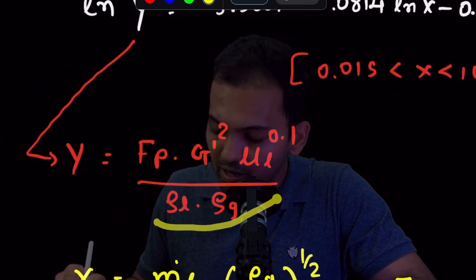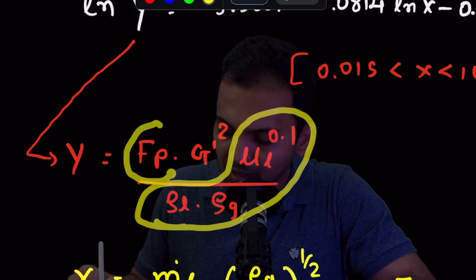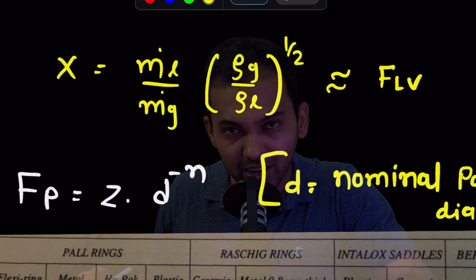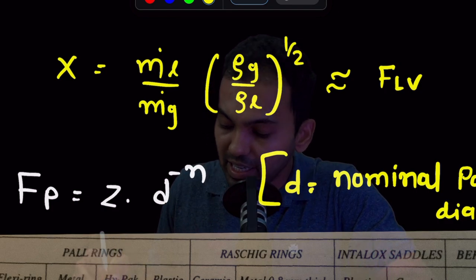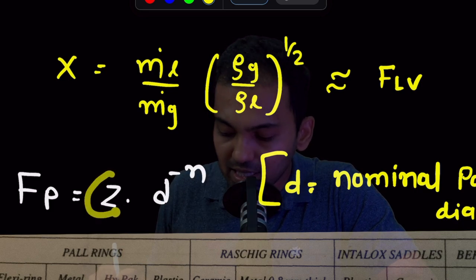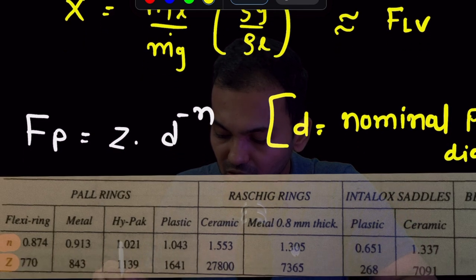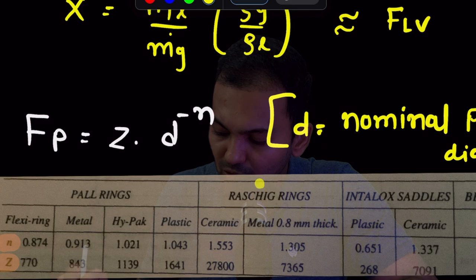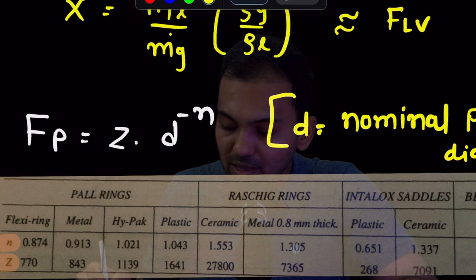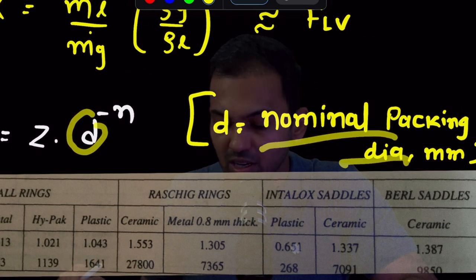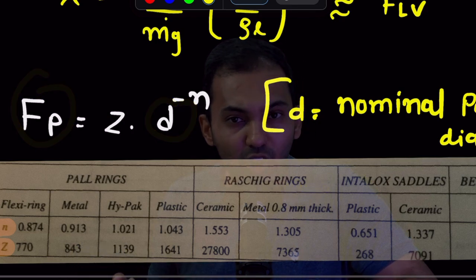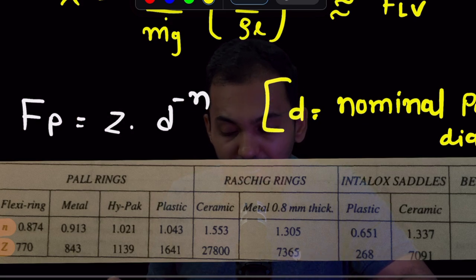Once I have the Y value and these common fluid parameters and packing parameter, I can solve for the unknown, which is G' (mass velocity). The packing factor FP can either be taken directly from tables based on packing size, or calculated using: FP = Z × D^(−n), where Z and N are constants. For example, for Paul ring packing, based on different MOC — flexi ring metal, high pack, plastic — the values of N and Z are available in a table, as are values for Raschig rings (ceramic and metal), interlocks, and many more. The nominal packing diameter D is substituted in to get the packing factor.